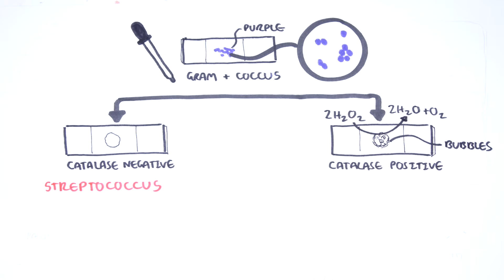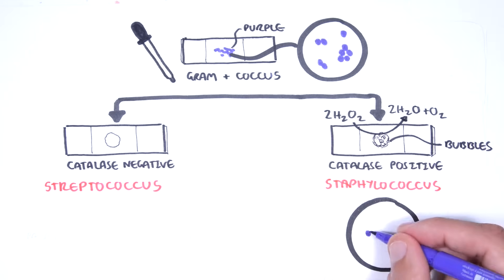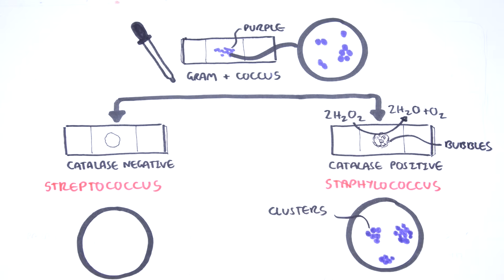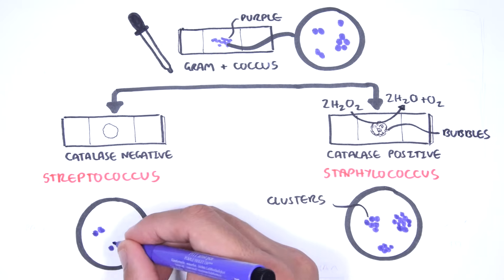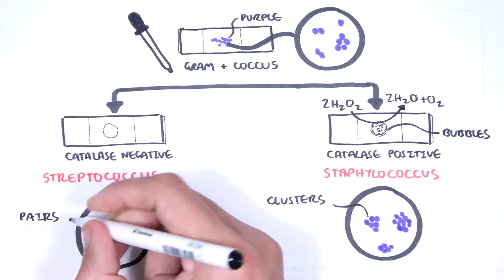Hence, on a slide or tube, bubbles are formed. The second criteria to differentiate staphylococcus from streptococcus is based on microscopic appearance. Staphylococcus species are usually in clusters, whereas streptococcus species are arranged in pairs or chains.